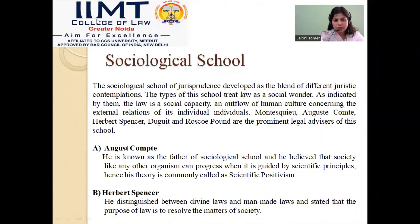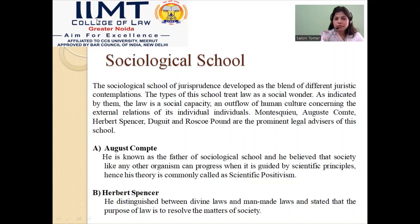After revising what we have read, the sociological school of jurisprudence developed as a blend of different juristic contemplations. This type of law is a social wonder. As indicated by them, the law is a social capacity, an expression of human culture concerning the external relations of its individuals. Montesquieu, Auguste Comte, Herbert Spencer, De Geet, and Roscoe Pound are the prominent legal advisors of the school. Auguste Comte is known as the father of the sociological school and believed that society, like any other organism, can progress when guided by scientific principles — hence this theory is commonly called scientific positivism.